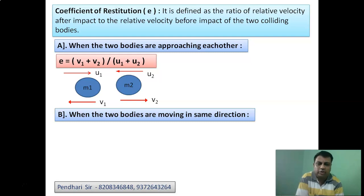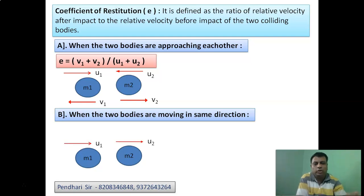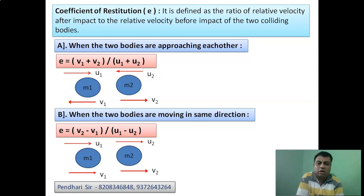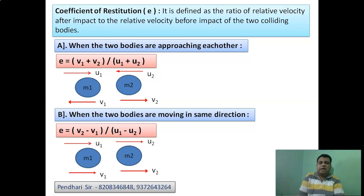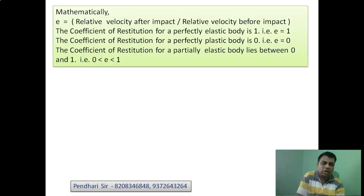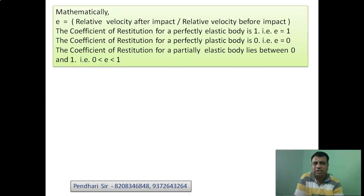The second condition: when two bodies are moving in the same direction with velocities U1 and U2 (where U1 > U2 for collision to occur), and after impact velocities are V1 and V2, the coefficient of restitution e = (V2 − V1) / (U1 − U2). Here the difference of final velocities is in the numerator and the difference of initial velocities is in the denominator — larger minus smaller in each case. Both these cases should be remembered as they can be asked in exams.